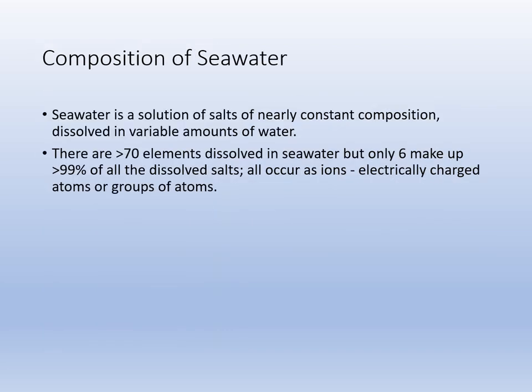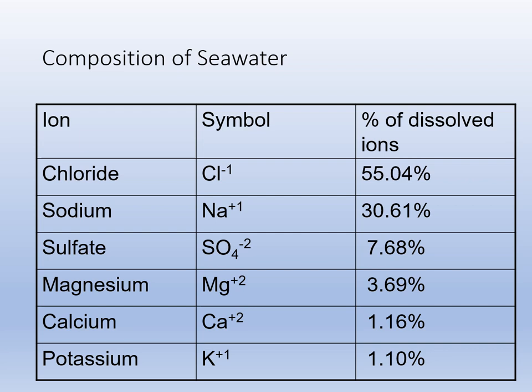So what is seawater made of? There are greater than 70 elements, but really only six of them make up the bulk of dissolved solids: chloride, sodium, sulfate — which is a polyatomic ion — magnesium, potassium, and calcium. These are the major constituents of dissolved salt.